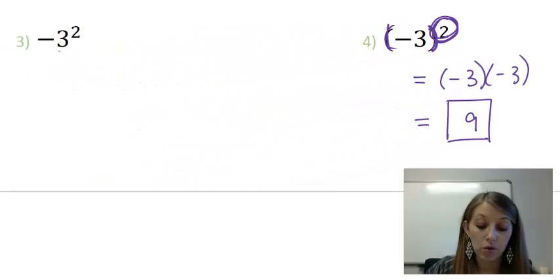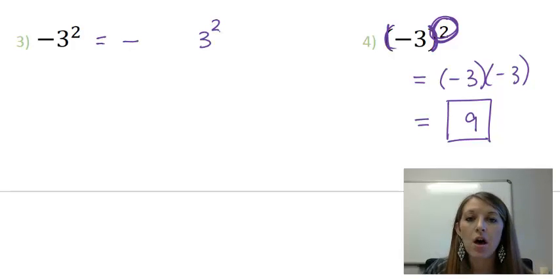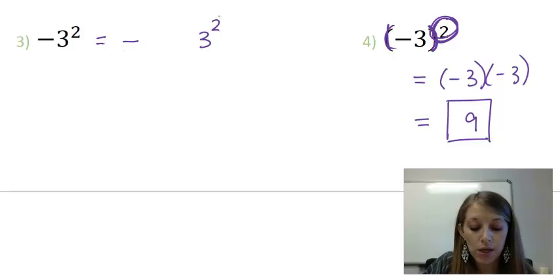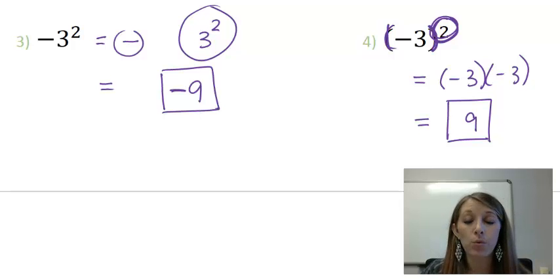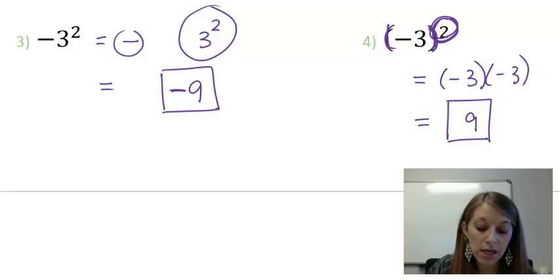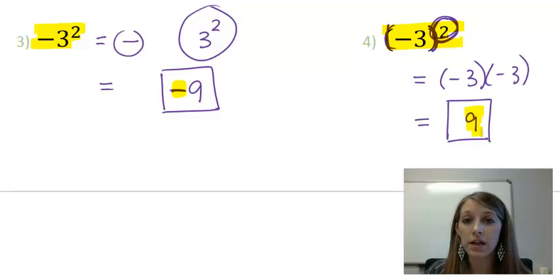Example 3 looks almost the same but is in fact different. The negative does not go to the power. I can write this as negative times 3 squared — notice there is nothing holding the negative to the 3. So really this is just 3 to the second power: 3 times 3 gives me 9, and then I copy down the negative. So the answer is negative 9. Be careful on which way the problem asks it, and be careful how you enter it into the calculator, because the calculator will do exactly what you tell it to do.